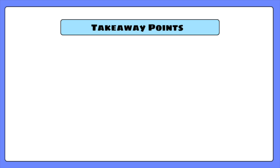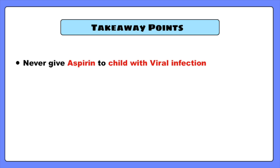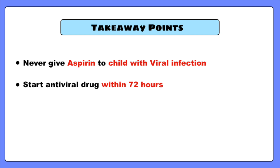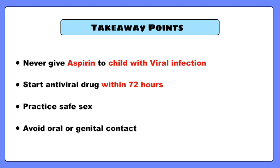Here are 4 important things to remember. First, if your child ever gets a viral infection, never treat them with aspirin as it can cause fatal Reye's syndrome. Second, start antivirals within 72 hours when the first tingling sensation is felt. Third, prevention is much better than cure — always practice safe sex and avoid sexual activity when you have active lesions. Fourth, people with active symptoms of oral herpes should avoid oral contact with others, avoid sharing objects that contact saliva, and abstain from oral sex to avoid transmitting herpes to the genitals of a sexual partner.